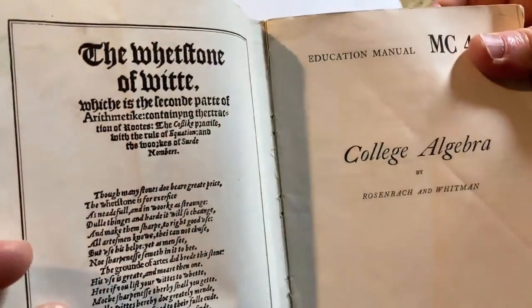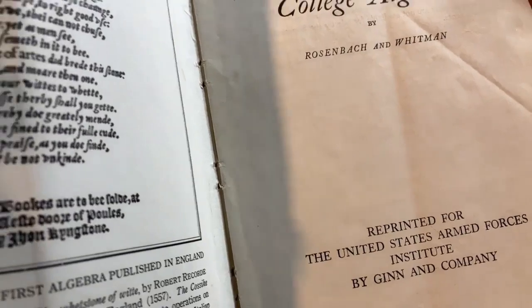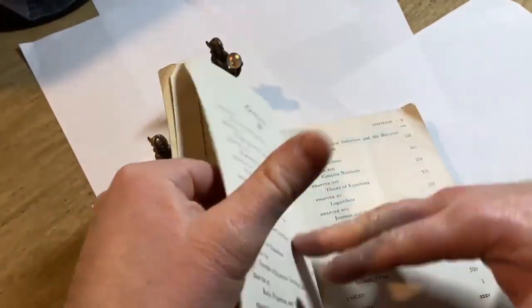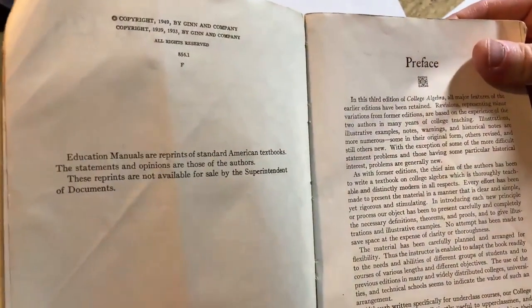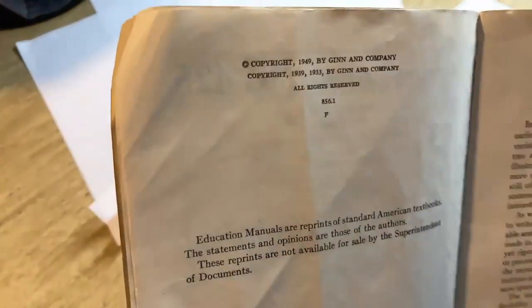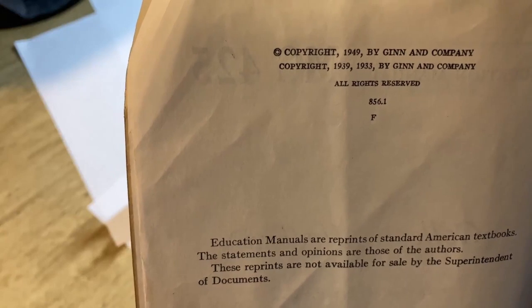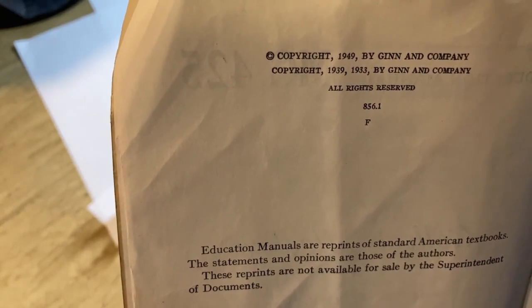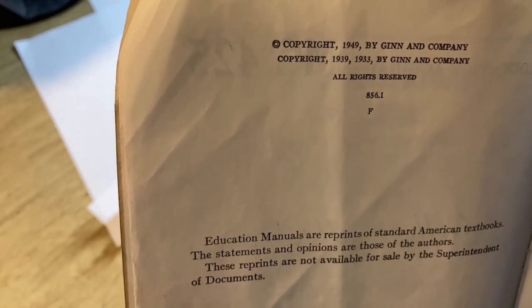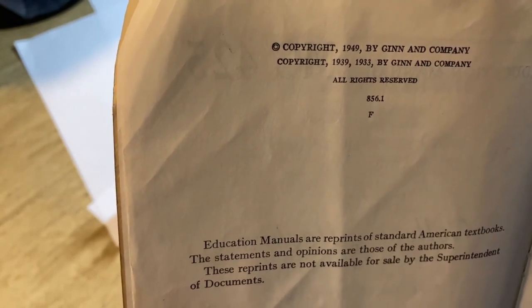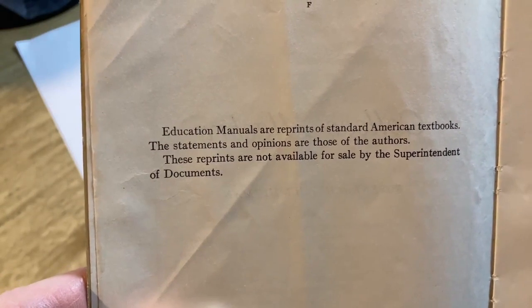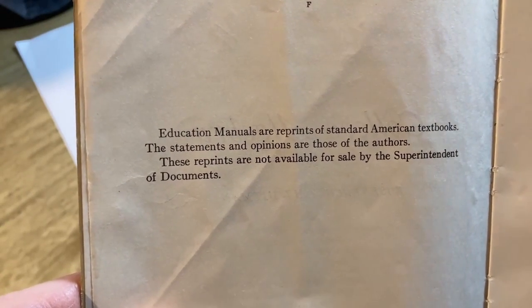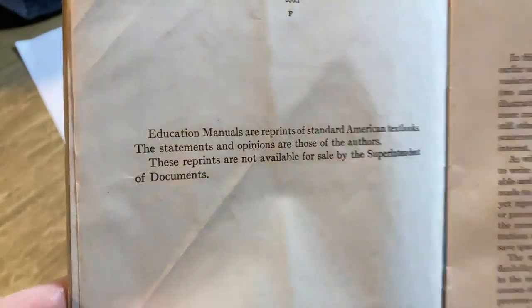College Algebra by Rosenbach and Whitman, reprinted for the United States Armed Forces Institute by Ginn and Company. This is really cool. They have other books besides math. I have several of their books on other subjects as well. As a collector of math and science books, I have all kinds of books. Here you can see the copyrights. This is really interesting. So copyright 1949 by Ginn and Company, and then copyright 39 and 33 by Ginn and Company. So this one's probably from 49. And the original books were from 33 and 39. First printing was probably 33.